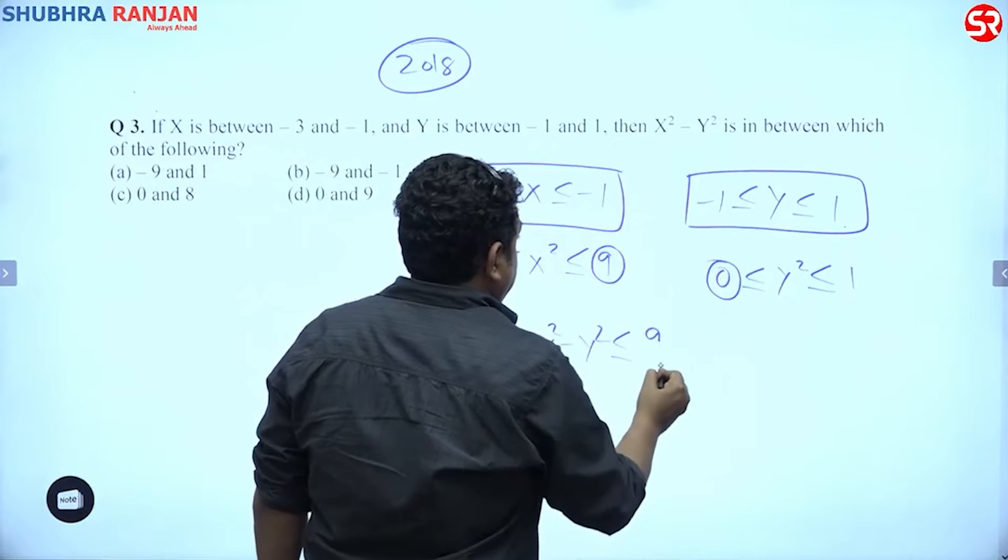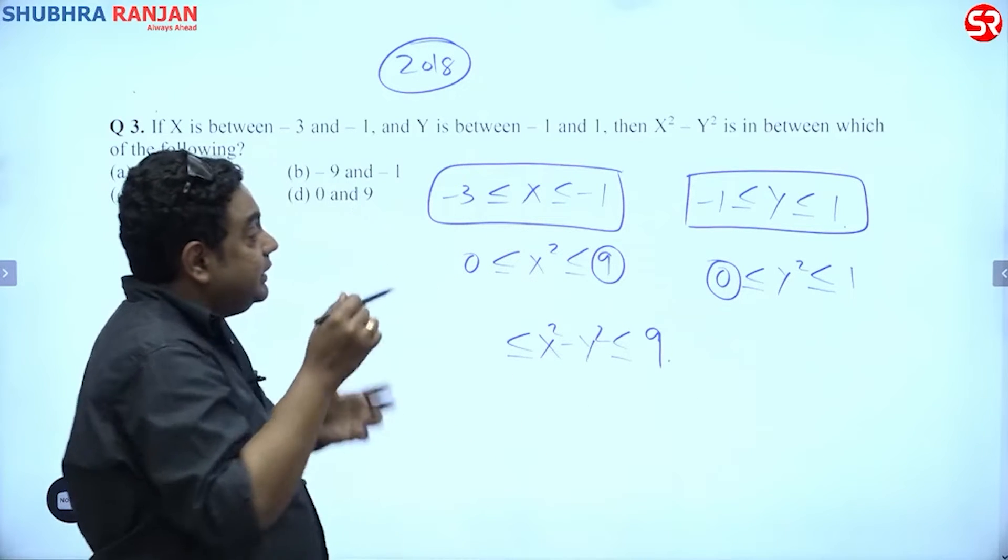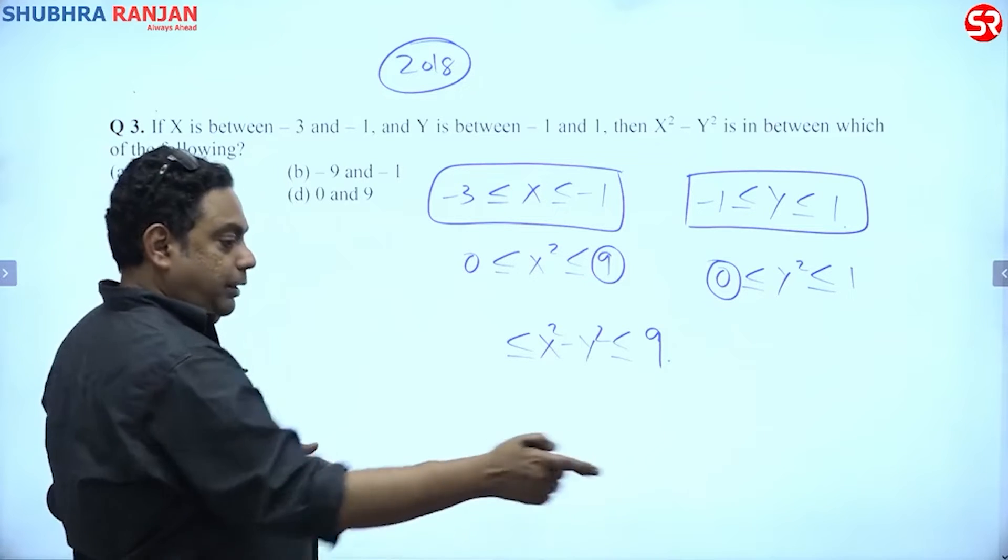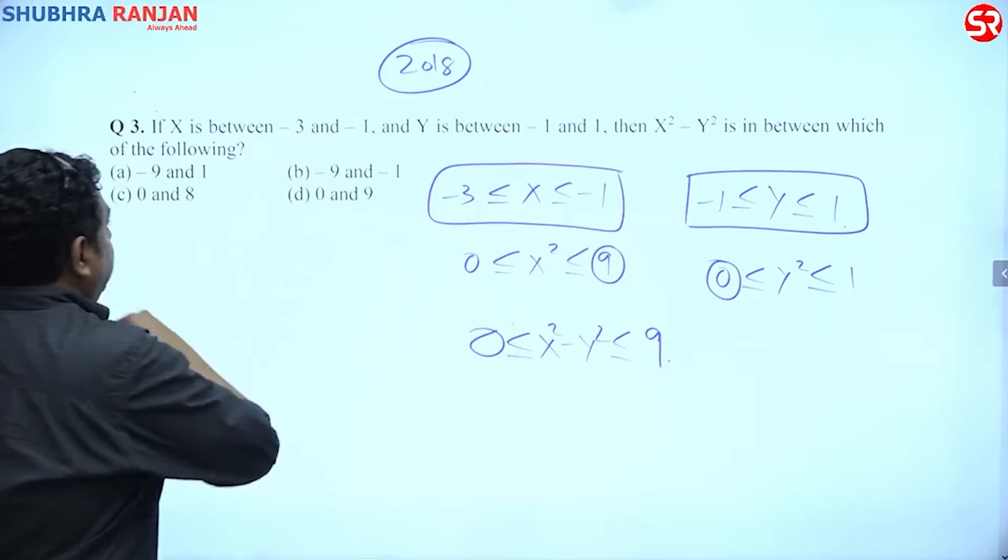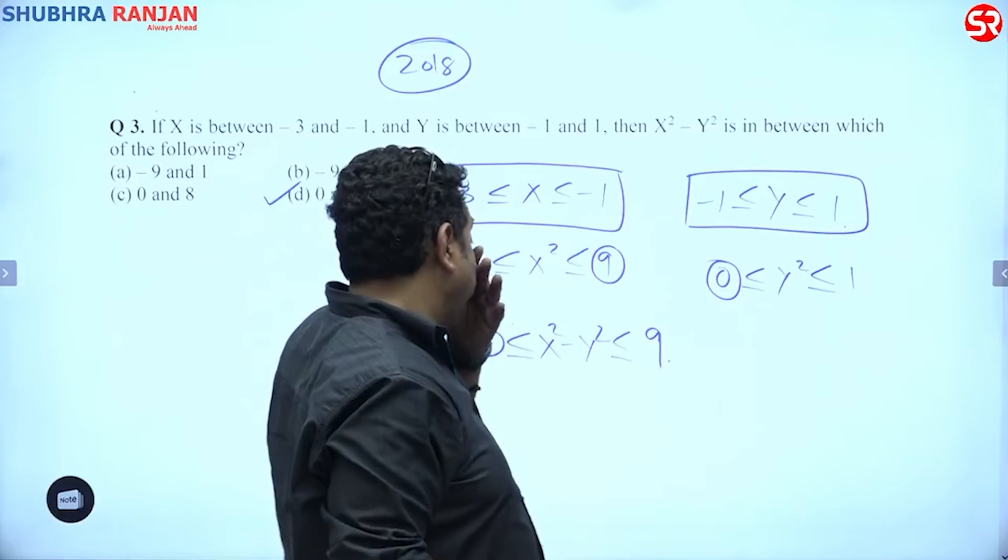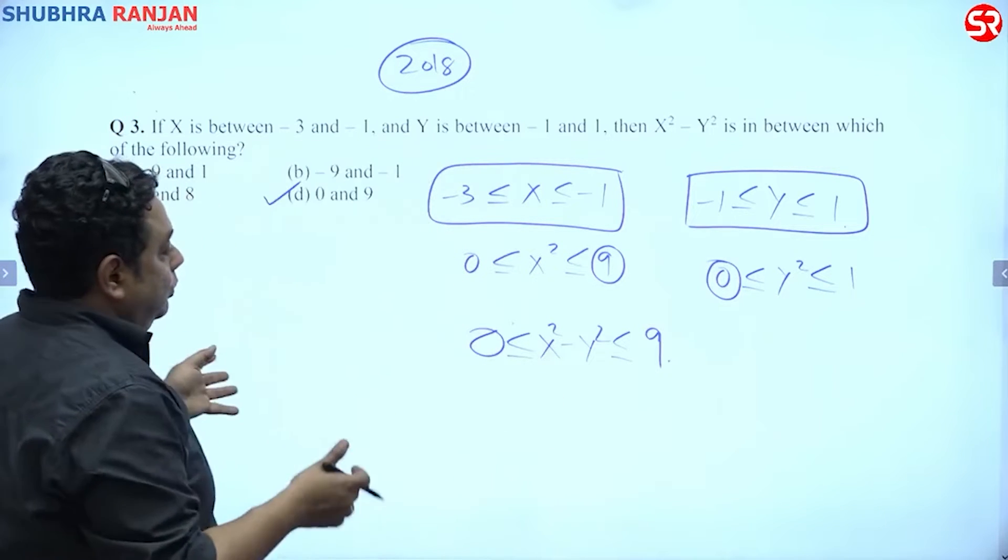And minimum value would be 0. So actually it lies between 0 to 9, all right? So most of the time people say 0 to 8, no.